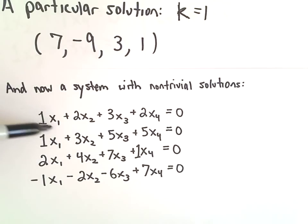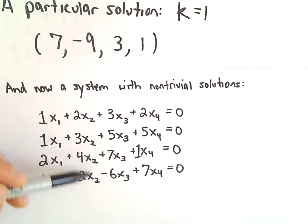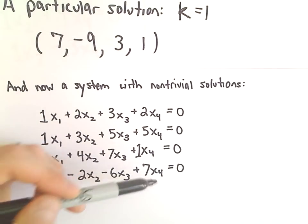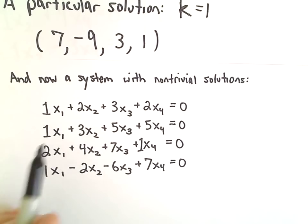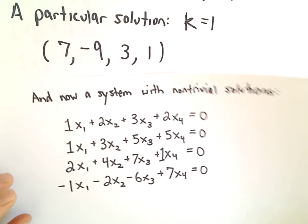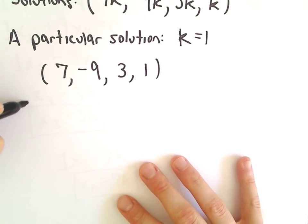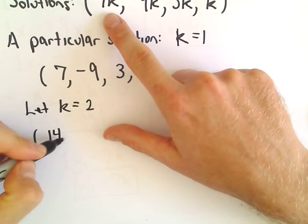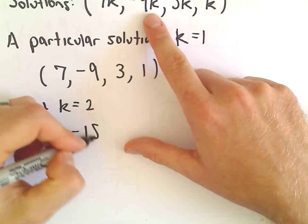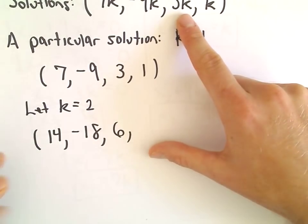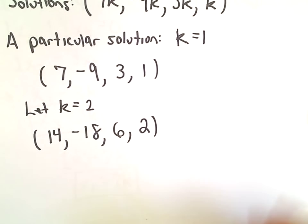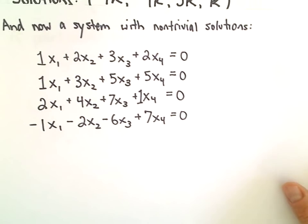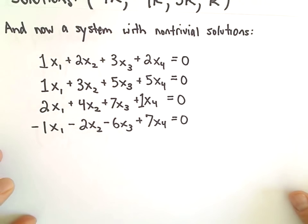This is going to be a solution to the original system of equations. So I'm definitely not going to check. But what you can do is you can plug 7 in for x1 everywhere, negative 9 in for x2 everywhere. x sub 3 would equal 3 everywhere, x sub 4 would equal 1 everywhere. And you would find that you have a solution to this system of equations. Of course, you could find another particular solution. We could let k equal 2. And then, our particular solution, 7 times 2 would be 14, 9 times 2 would be negative 18, 3 times 2 would be 6. And then k is simply equal to 2. So that would be another particular solution.